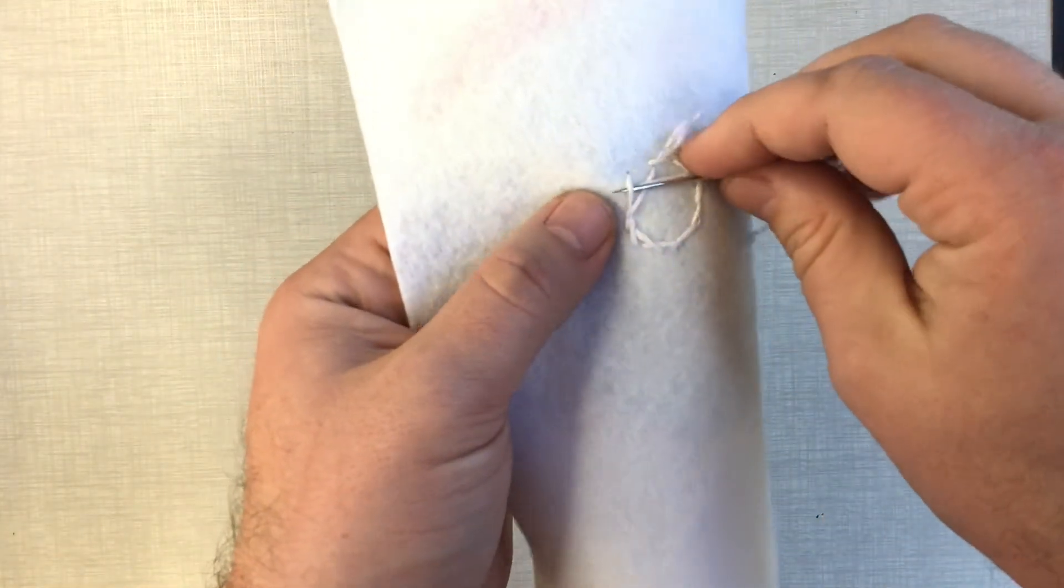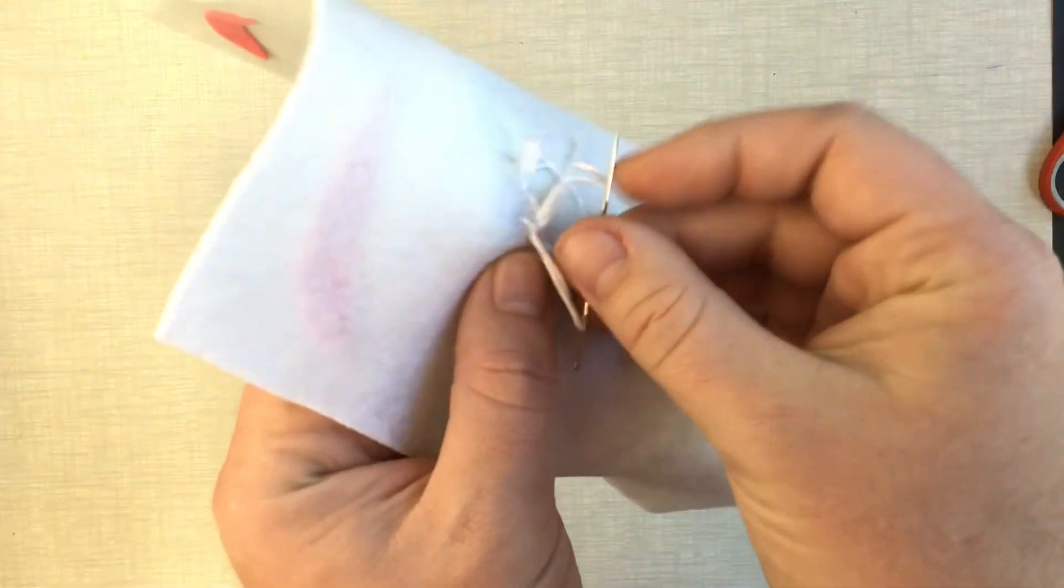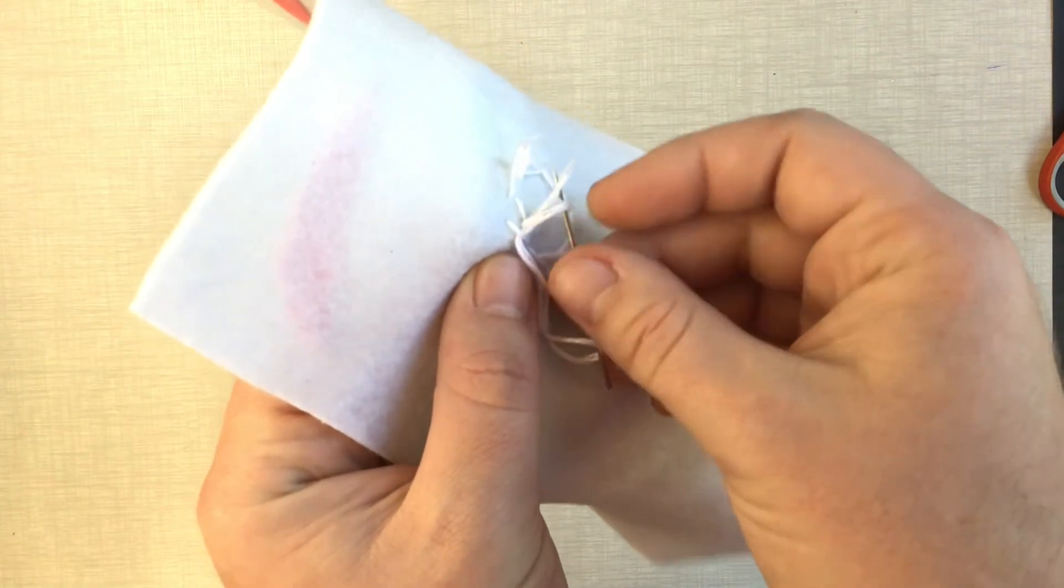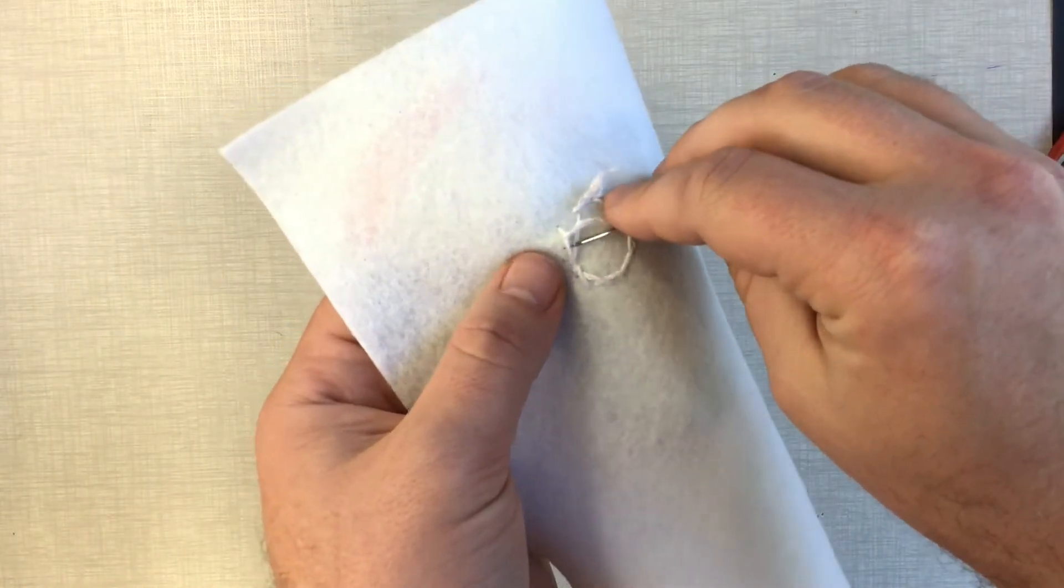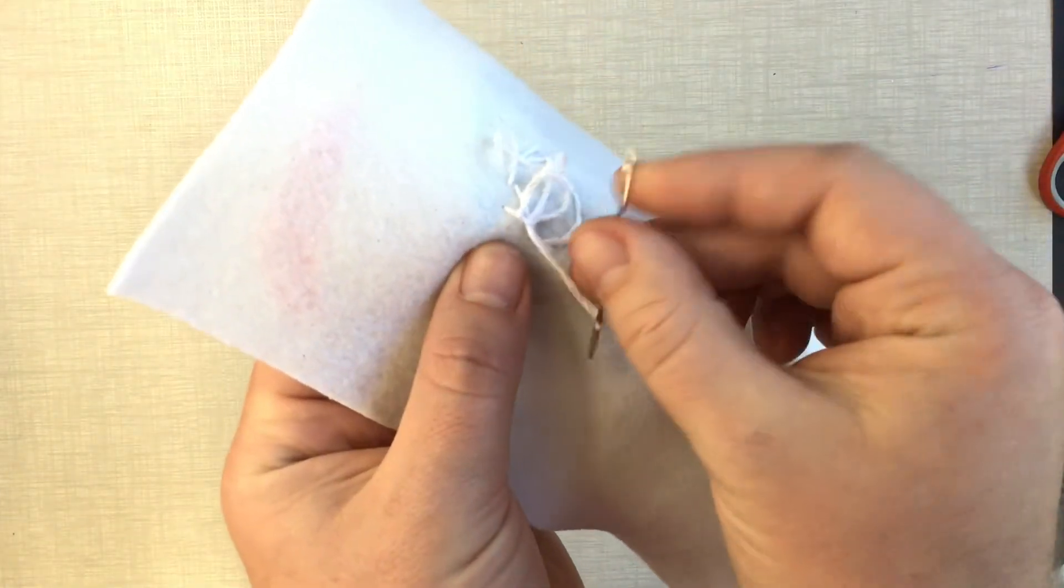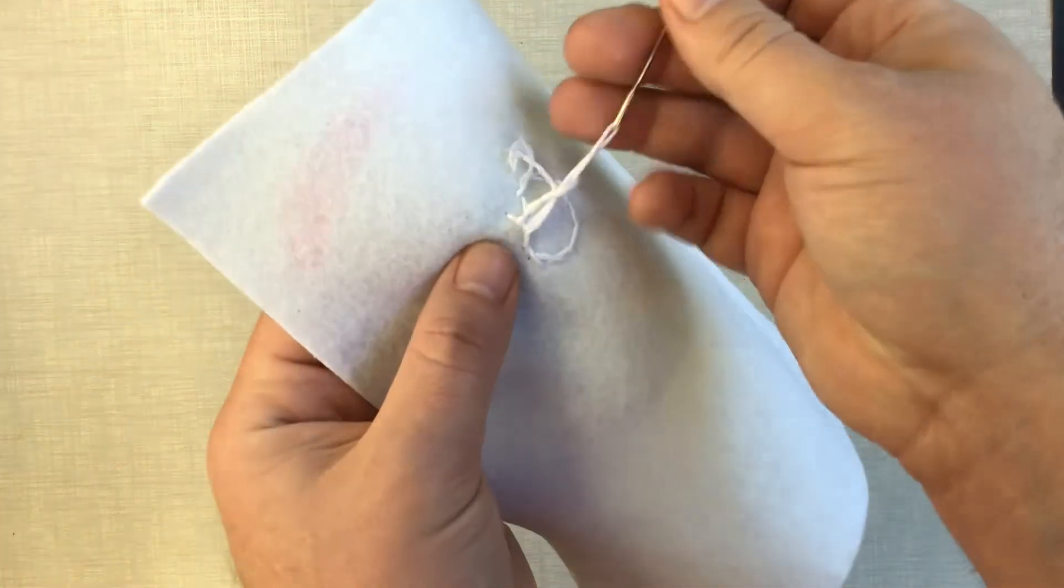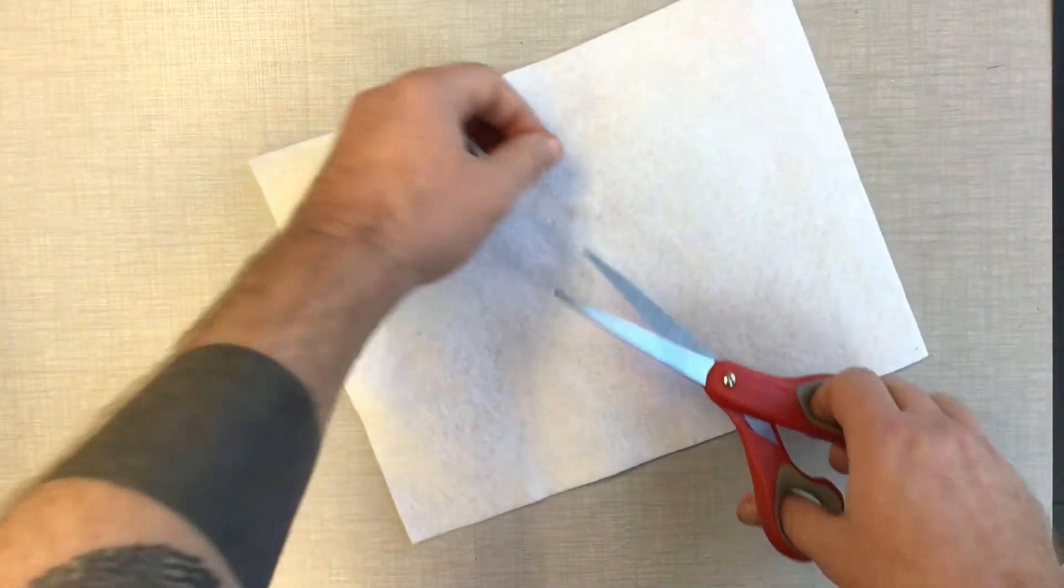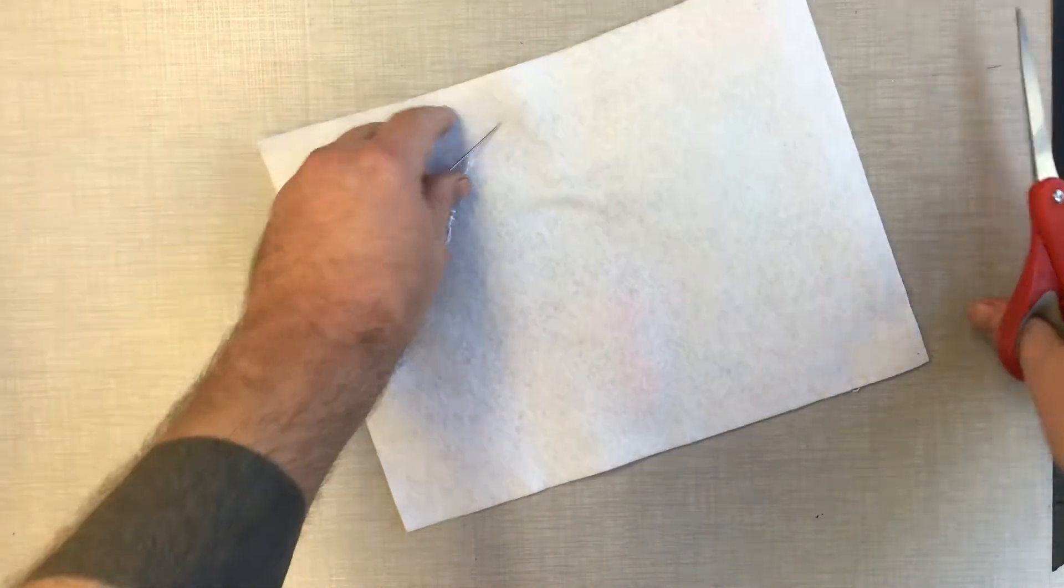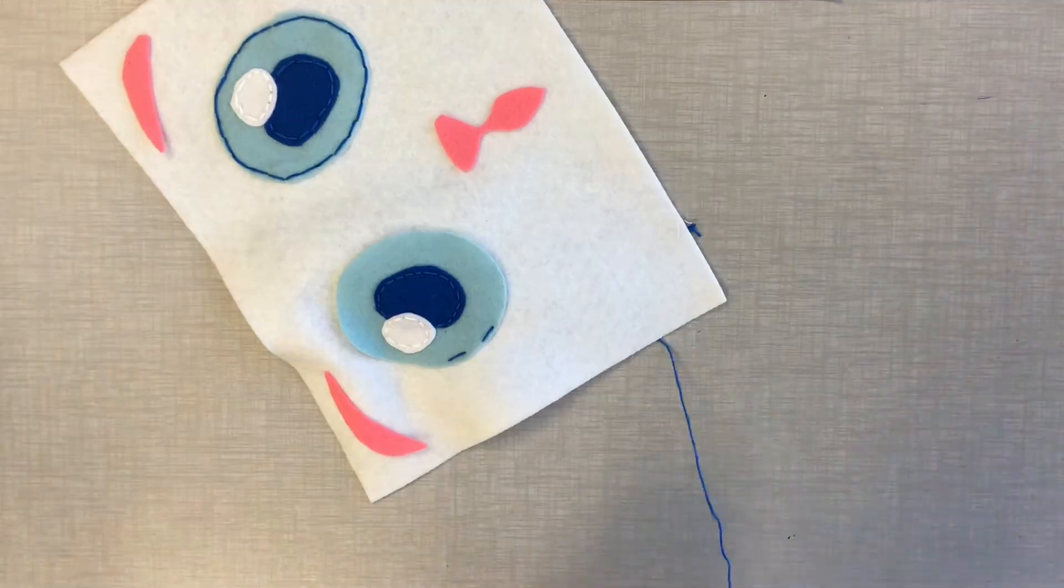When you're in the back, you're going to loop the thread underneath it. And then kind of just tie a knot. Go ahead and tie another knot because I don't trust people that only use one knot on things. Go ahead and cut off the excess. You can really cut it a lot closer than that. I don't know why I did that.